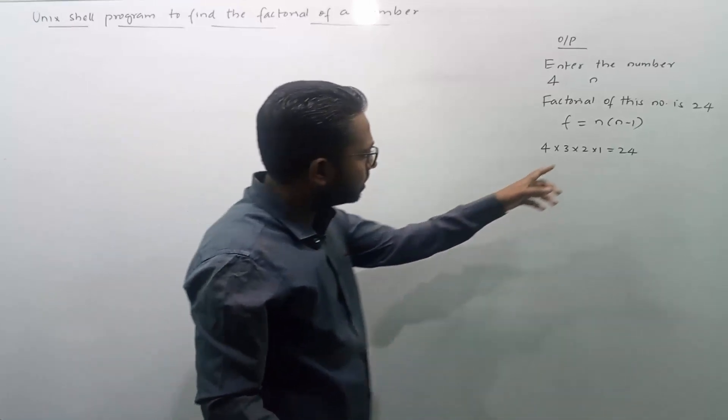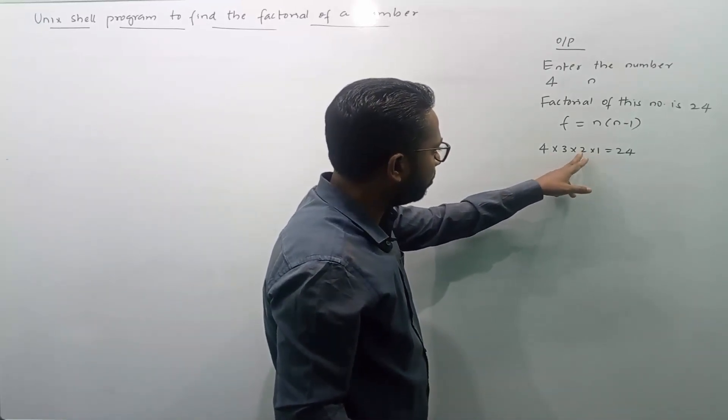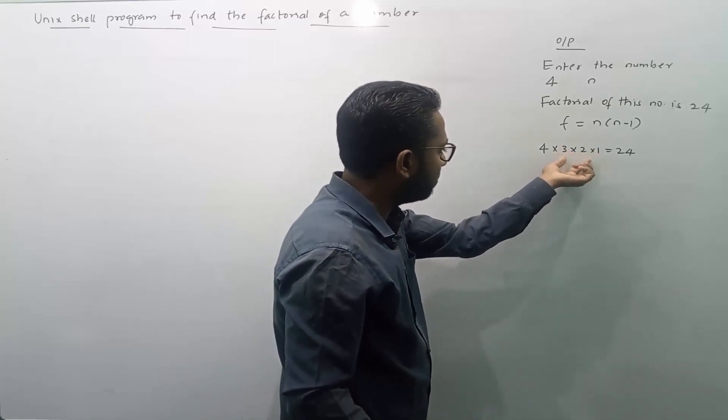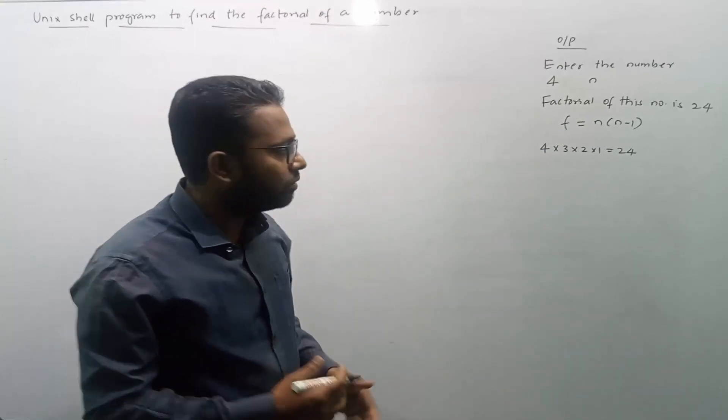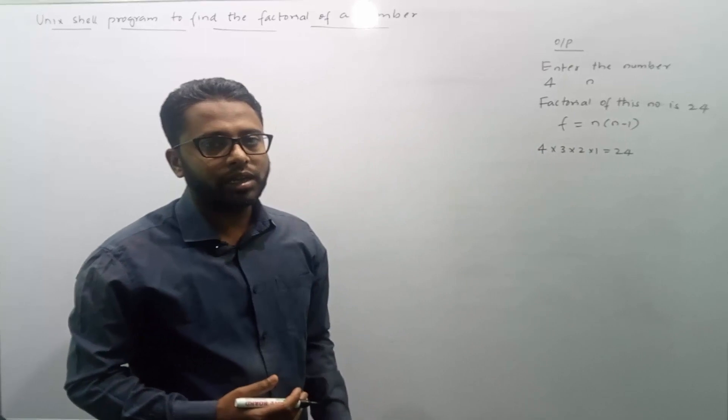Next, as you can see here, 1 gets multiplied with 2, then output of these 2 numbers gets multiplied with 3, then the output of these 3 numbers gets multiplied with 4. So I am starting with the value 1, then 2, then 3, then 4 like this.